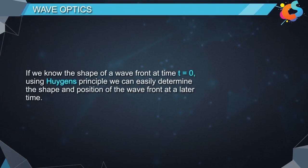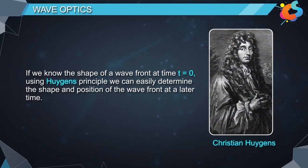Now, if we know the shape of a wave front at time t equals zero, using Huygens principle we can easily determine the shape and position of the wave front at a later time.